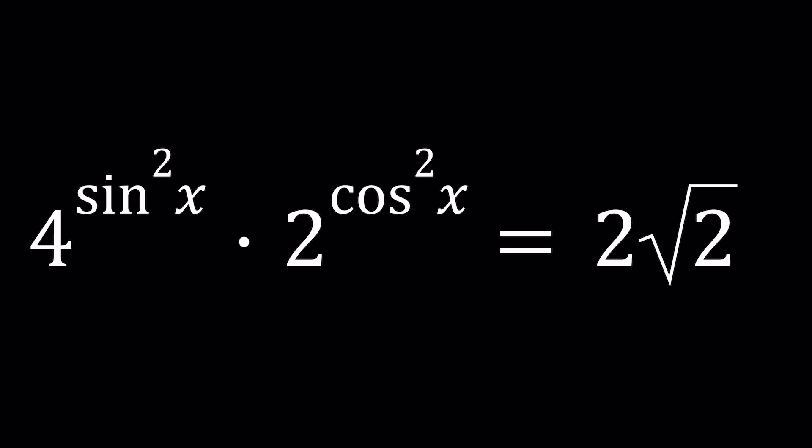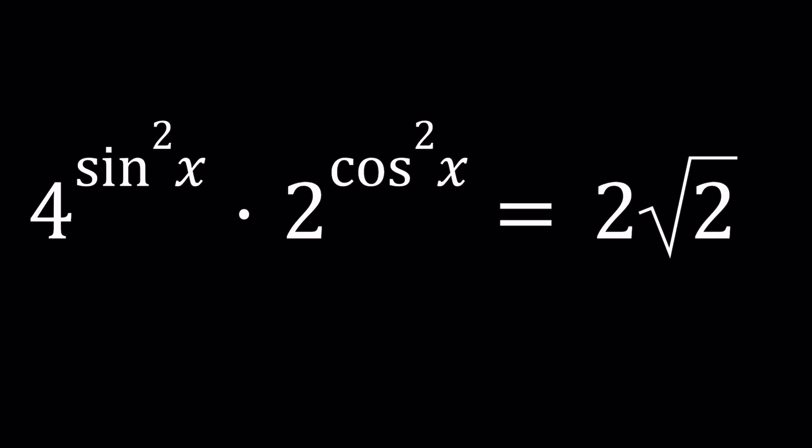To be able to solve this equation, first of all, take a look at both sides. We do see a 4, we do see a 2, forget about the variables, and then we have 2 root 2. What do you think they have in common? If you said they're all powers of 2 or they can be expressed as powers of 2, you got it.